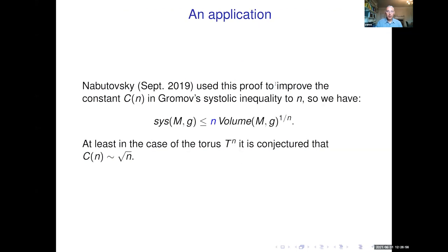As an application, Nabutovsky used this proof to improve the constant in Gromov's systolic inequality. Now we know the systole is bounded by just n times the volume^(1/n), rather than a strange combinatorial constant. Thank you very much.